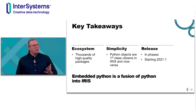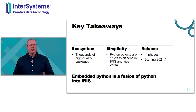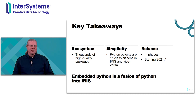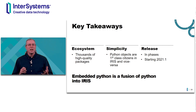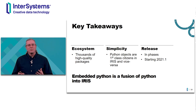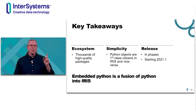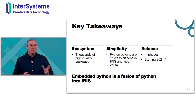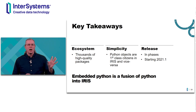Your key takeaways from today: with Embedded Python we now have access to many thousands of libraries that are ready to go — high quality, ready to be built upon. Simplicity — Python and ObjectScript can work together, so if you have stored procedures in ObjectScript today but want to rewrite them to use Python, you'll be able to do that. And I know you want to know when this is going to be released — it's going to be released in phases. The first phase we are anticipating being IRIS 2021.1 for IRIS in SQL.